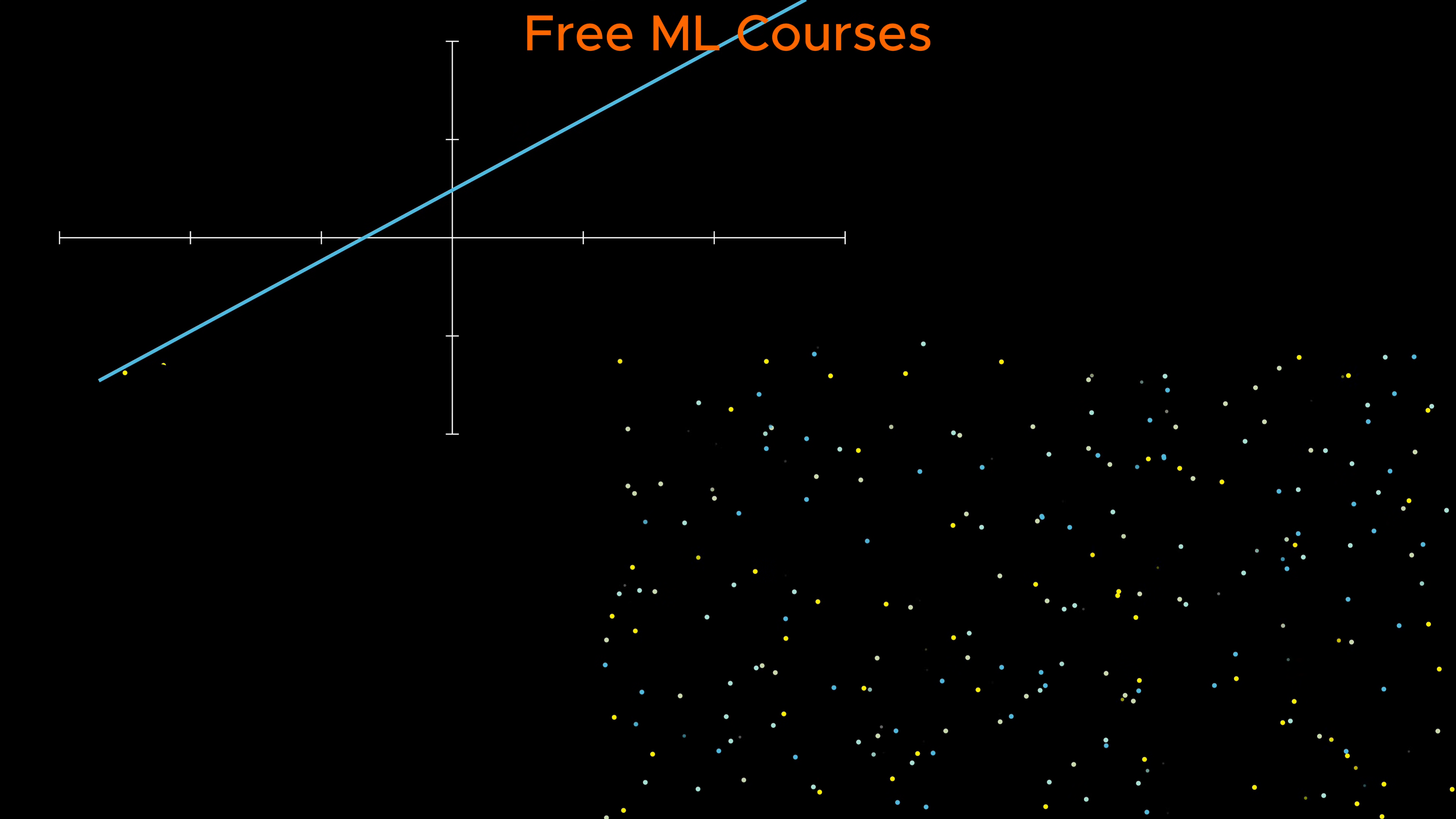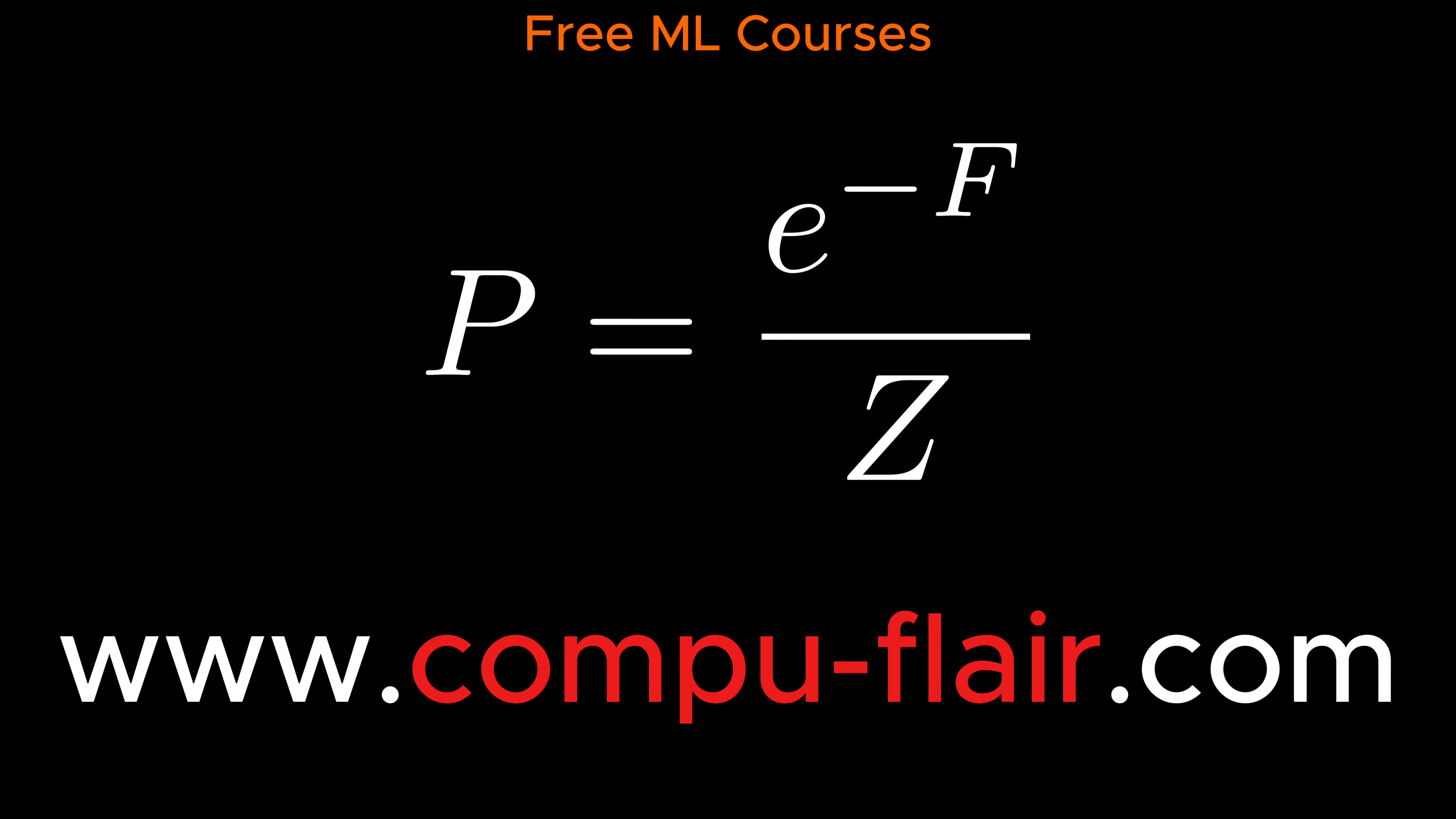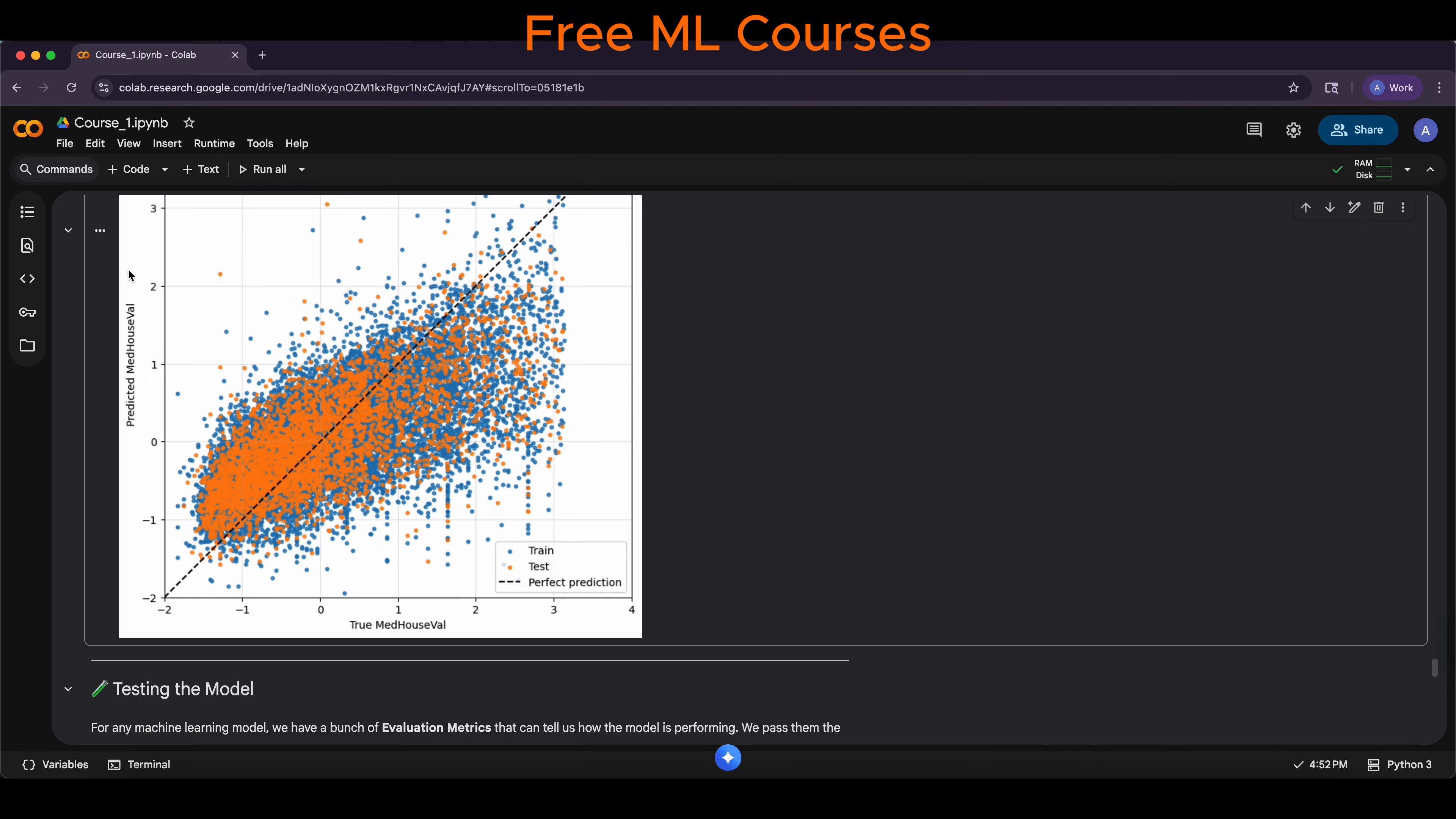Did you know that every machine learning model, from simple regression to image generating models like DALL-E, can be explained by a single elegant equation? If you're interested in learning machine learning in a unified way, visit our webpage at CompuFlare.com. This is a unique place to understand every machine learning model through one elegant equation from a physics-inspired perspective.